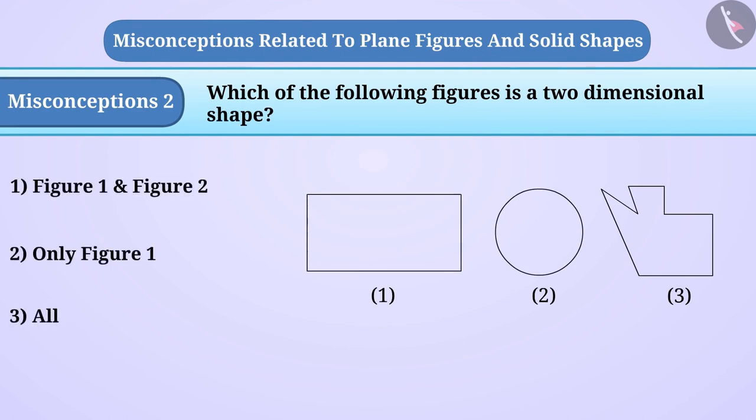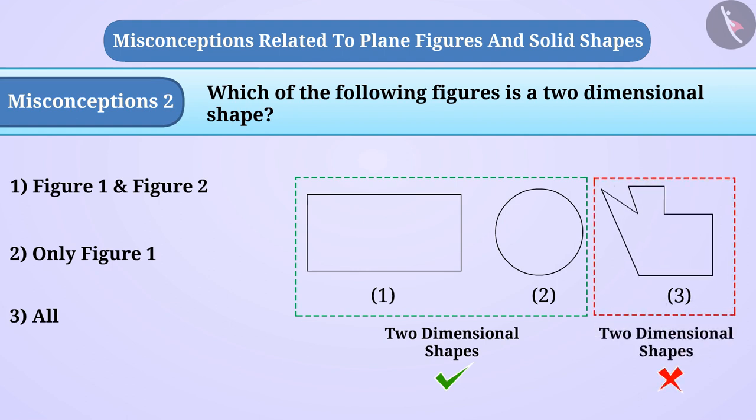Some children understand that only geometric shapes like rectangle and circle are two-dimensional shapes. So they think that figure 3 is not a two-dimensional shape. So they give option 1 as an answer, but this is a misconception.